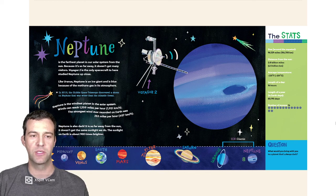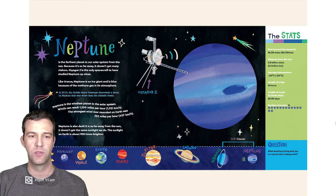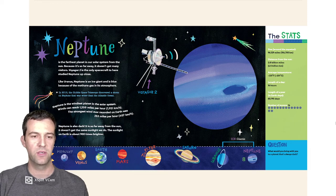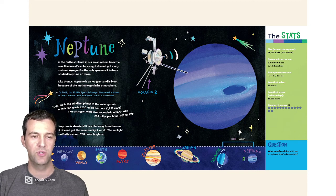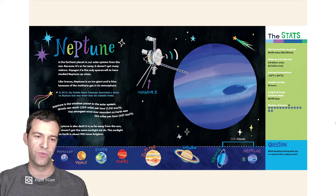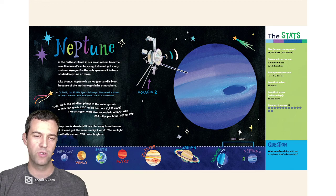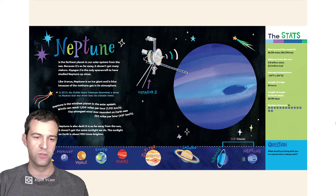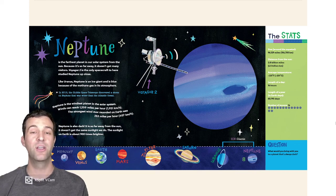Neptune is the furthest planet in our solar system from the sun. Because it's so far away, it doesn't get many visitors. Voyager 2 is the only spacecraft to have studied Neptune up close. Like Uranus, Neptune is an ice giant and is blue because of the methane gas in its atmosphere. In 2018, the Hubble Space Telescope discovered a storm on Neptune that was wider than the Atlantic Ocean. Neptune is the windiest planet in the solar system. Winds can reach 1,200 miles per hour. The strongest wind ever recorded on Earth was 253 miles per hour. Neptune is also dark. It's so far away from the sun, it doesn't get the same sunlight we do. The sunlight on Earth is about 900 times brighter.